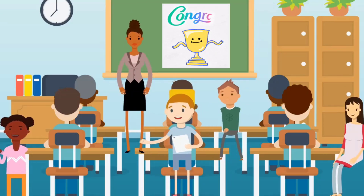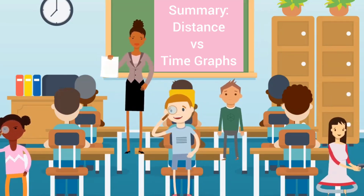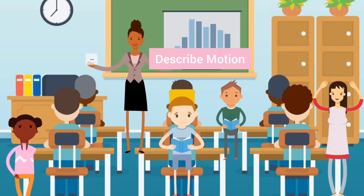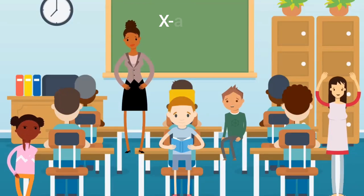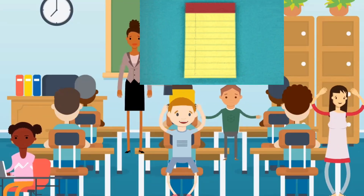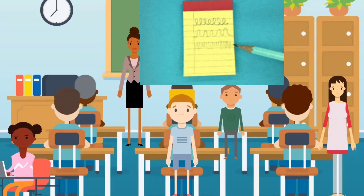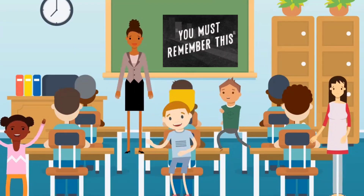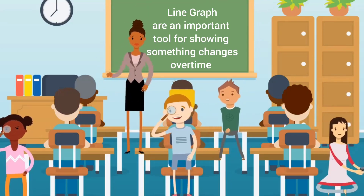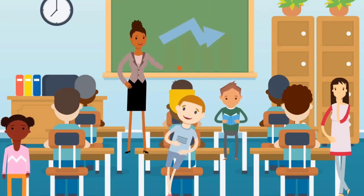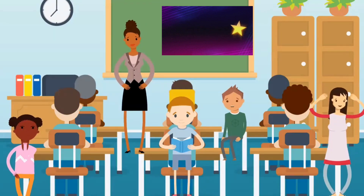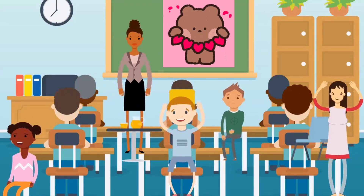You all did a great job, kids. Today, we learned about distance versus time graphs and how to describe motion using these graphs. We learned the parts of a line graph, like the x-axis, y-axis, data points, and line. We also learned how to create our own line graph step-by-step and how to interpret them. Remember, line graphs are an important tool for showing how something changes over time. By plotting data points and connecting them, we can see patterns and trends in motion. Keep practicing and you'll become an expert in graphing. Bye-bye, kids! God bless!